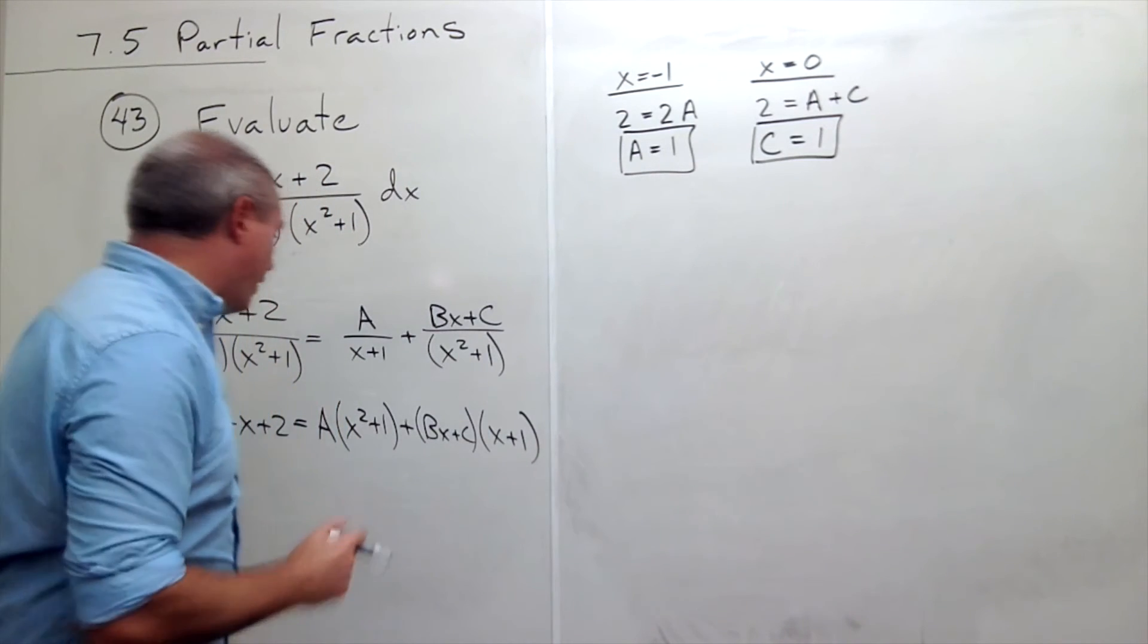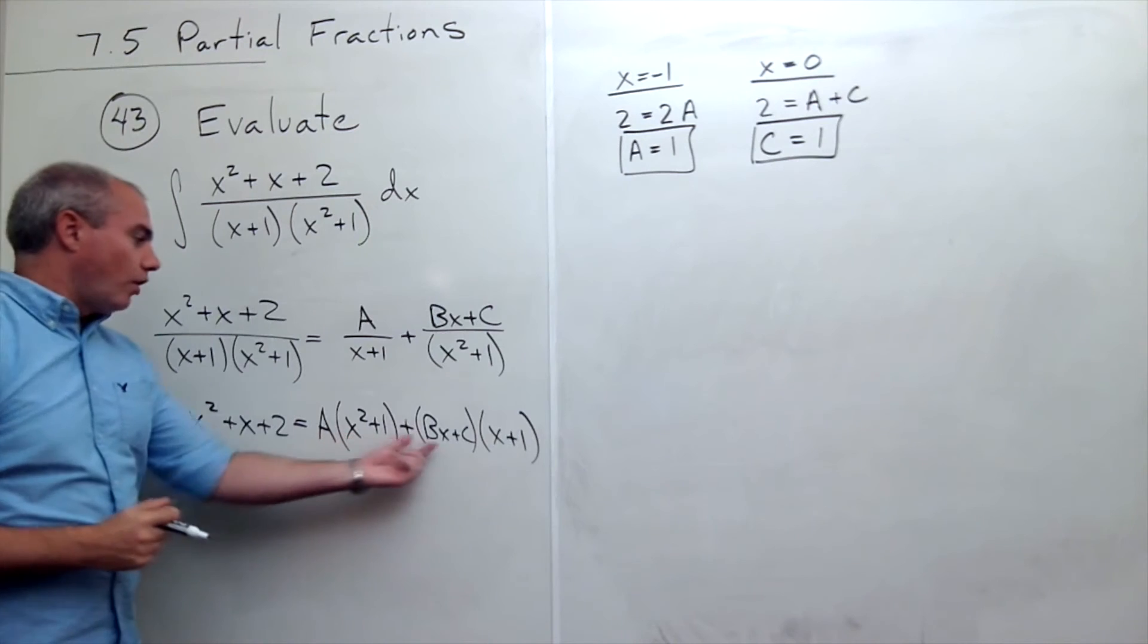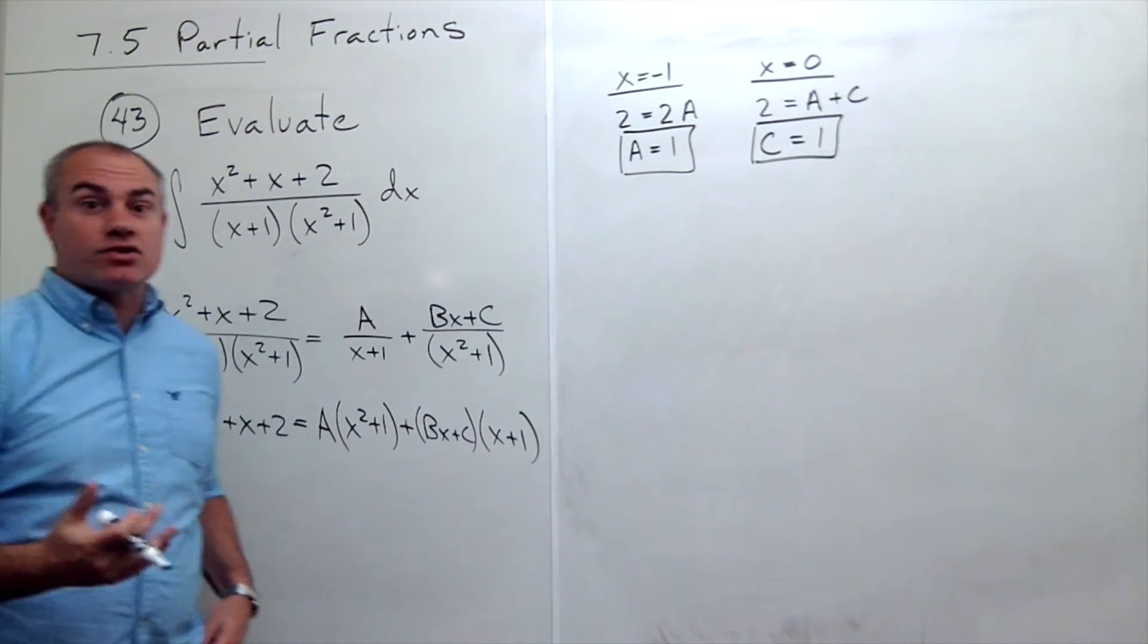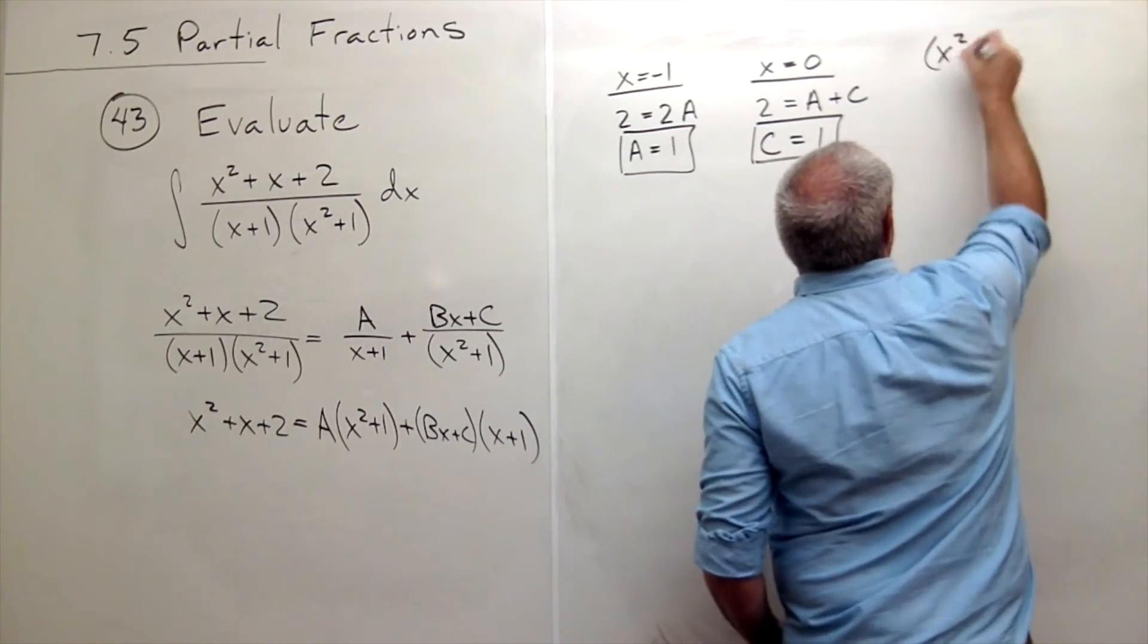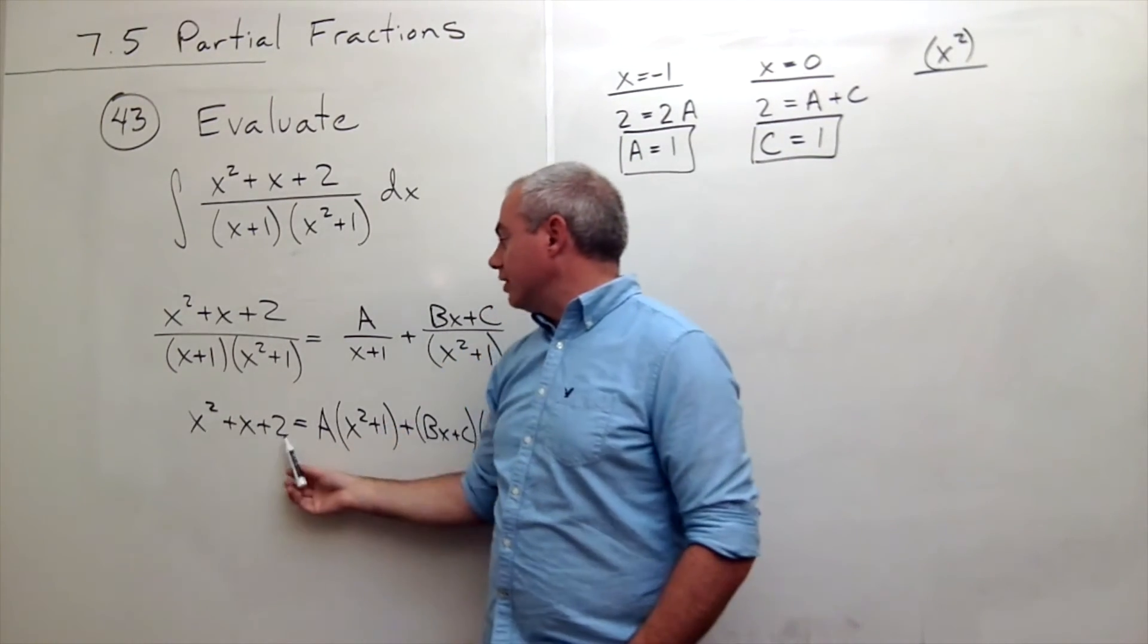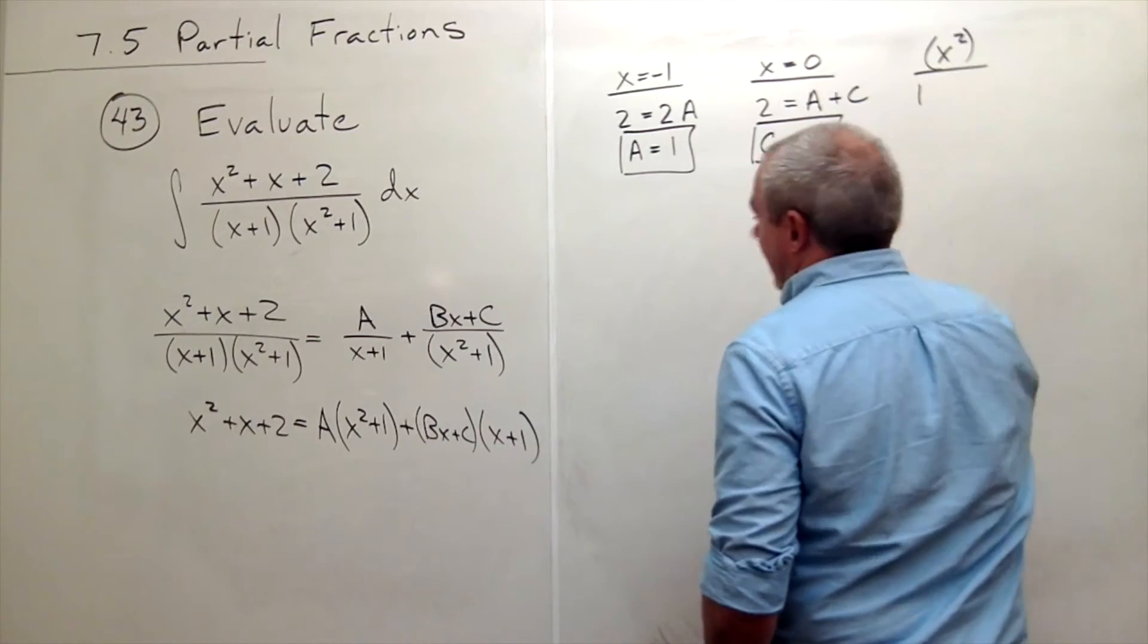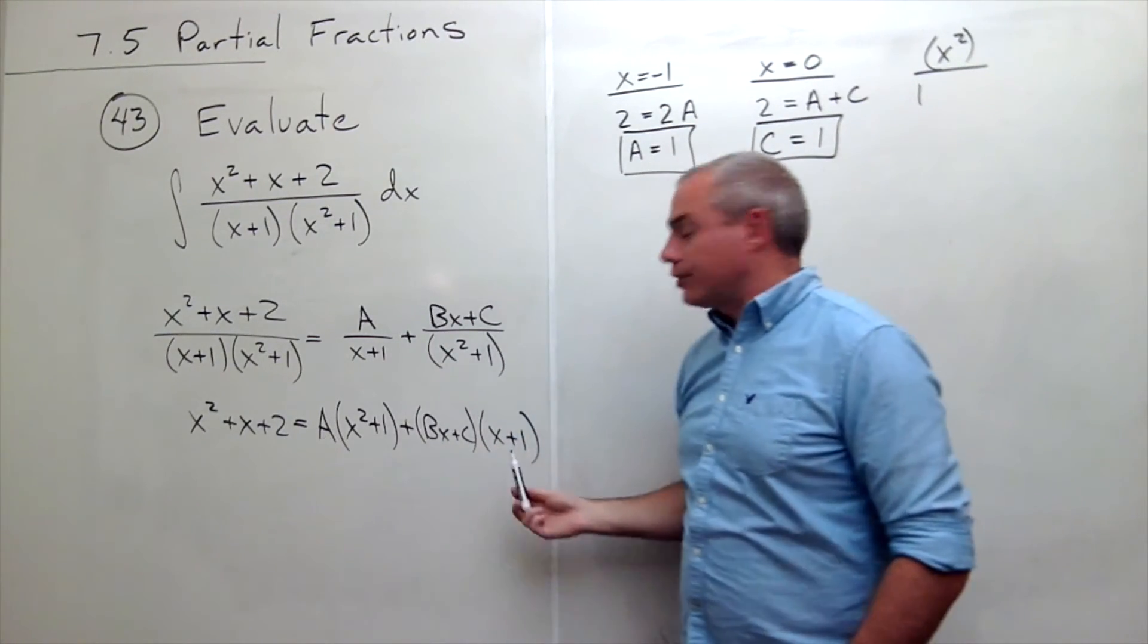All right. Now I need to solve for b, and so I need to get something involved that has b in it. How about the things that have x squareds? How many x squareds are sitting around here? Well, how many x squareds are on the left side? Just one. So there's one x squared on the left. How many x squareds are on the right side?